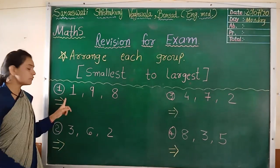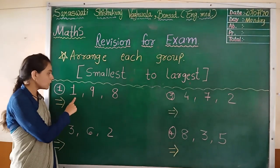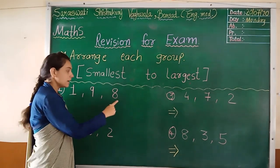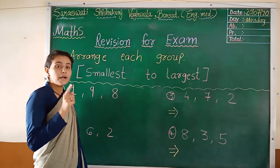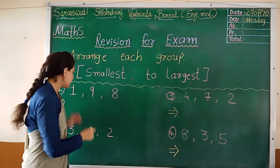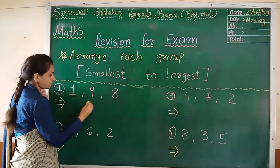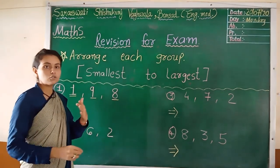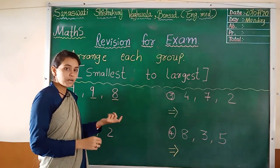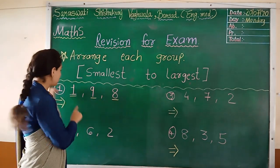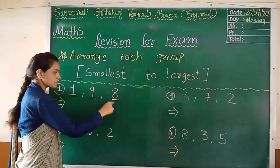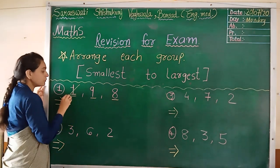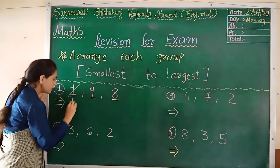Means small number you have to write first and largest number last. Now, look at here. First example. First one written here: one, nine, eight. First one you have to do. You have to draw first a line underneath. One, nine, eight. Then you have to compare them. Which is the smallest number from here? One, nine, eight. Which is the smallest number? One, right? So, you have to mark one first.